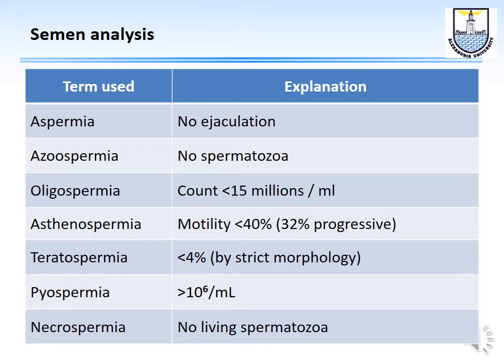Important terminology: aspermia means no ejaculation (e.g., retrograde ejaculation); azoospermia means an ejaculate with no sperm; oligospermia means few spermatozoa — less than 15 million/mL; asthenospermia means low motility — less than 40%; teratospermia means less than 4% normal forms by strict morphology; leukocytospermia means more than 1 million leukocytes/mL; and necrospermia means no living sperm.